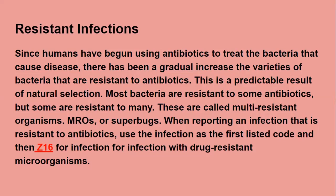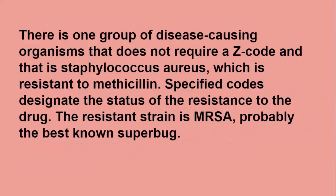If you go to Z16 in your ICD-10, you're going to see infections or parasitic diseases that are resistant to antibiotics and you will read through there and find which one you're looking for. There is one group of disease-causing organisms that does not require a Z code — this is Staphylococcus aureus resistant to methicillin. Specified codes designate the status of resistance to the drug. The resistant strain is MRSA, probably the best-known superbug.